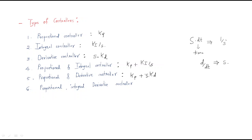The proportional-derivative controller is kp plus kd times s. The derivative controller always has multiplication by s, and the integral controller always has division by s. Finally, the proportional-integral-derivative controller is kp plus ki/s plus kd times s. Proportional is a constant with no s terms; integral has division by s; derivative is multiplied by s.